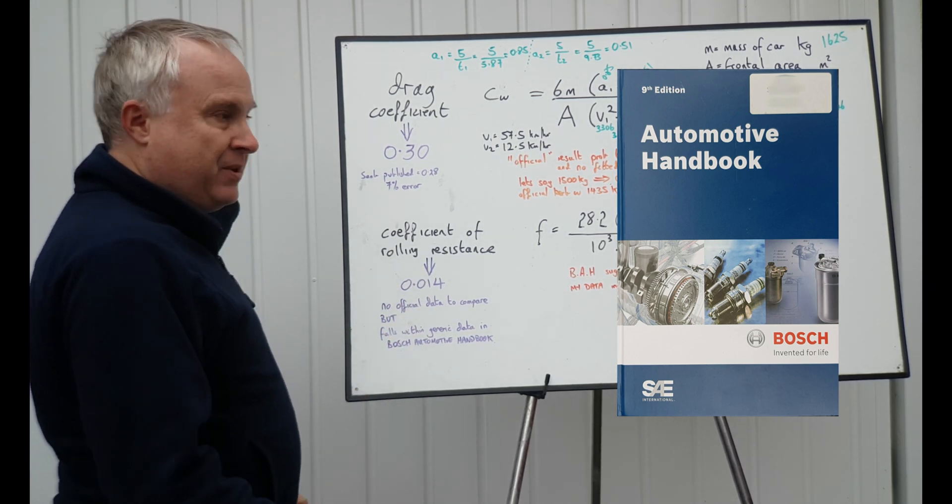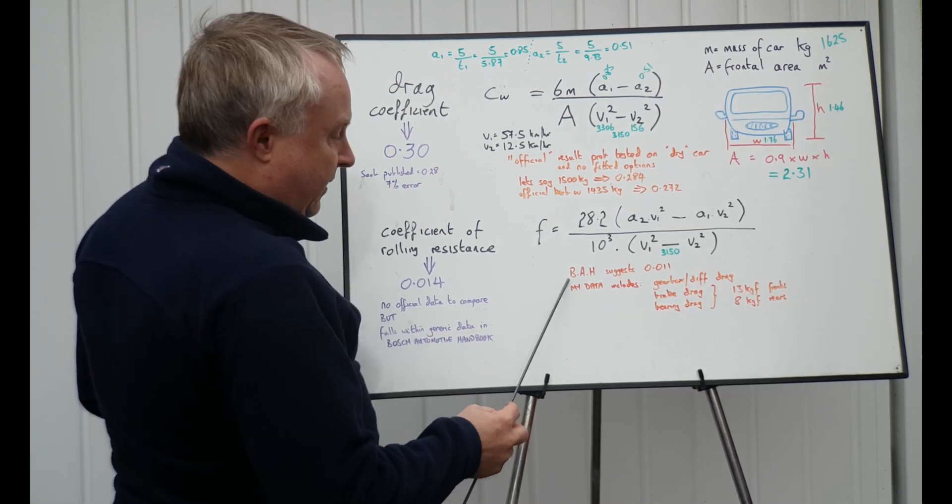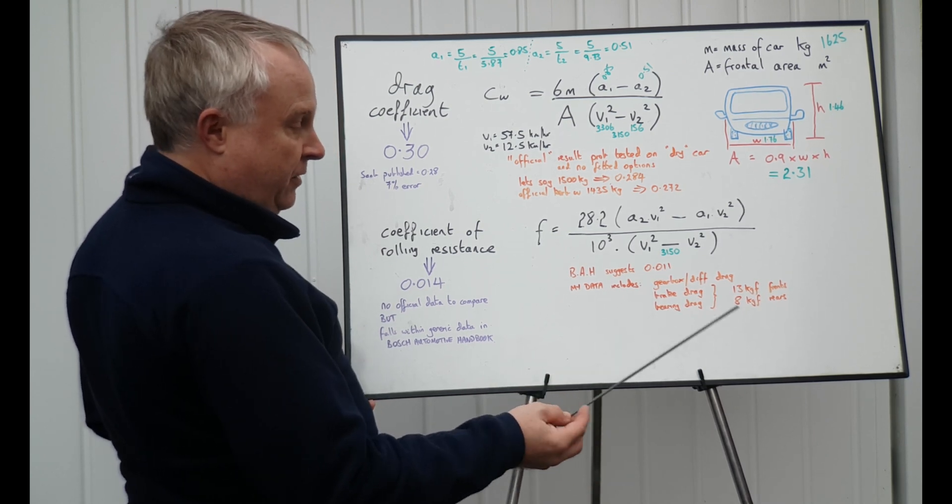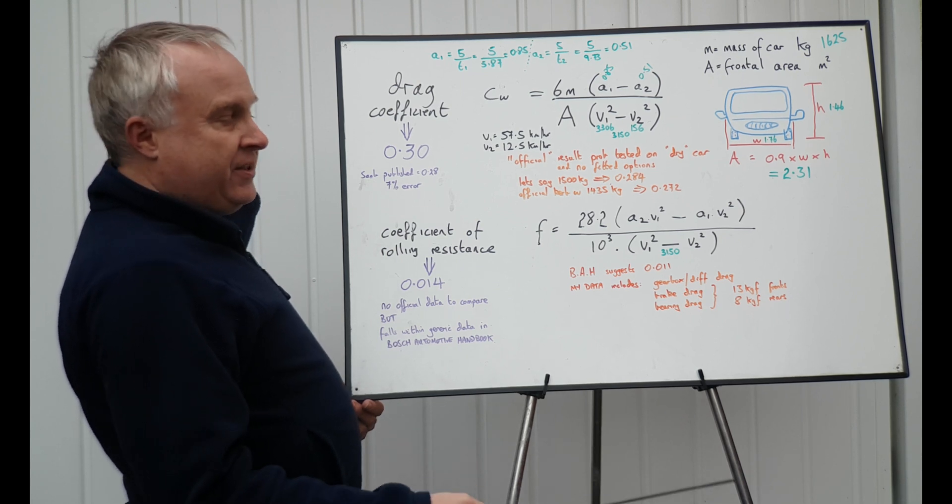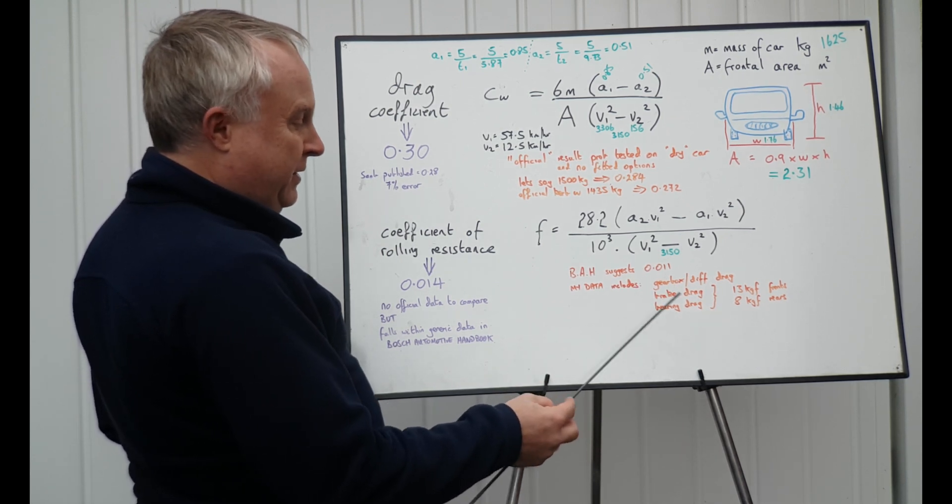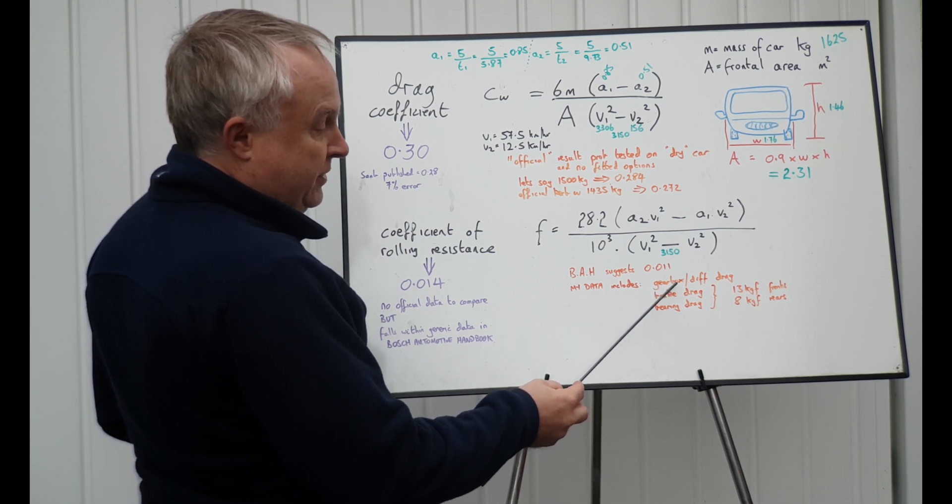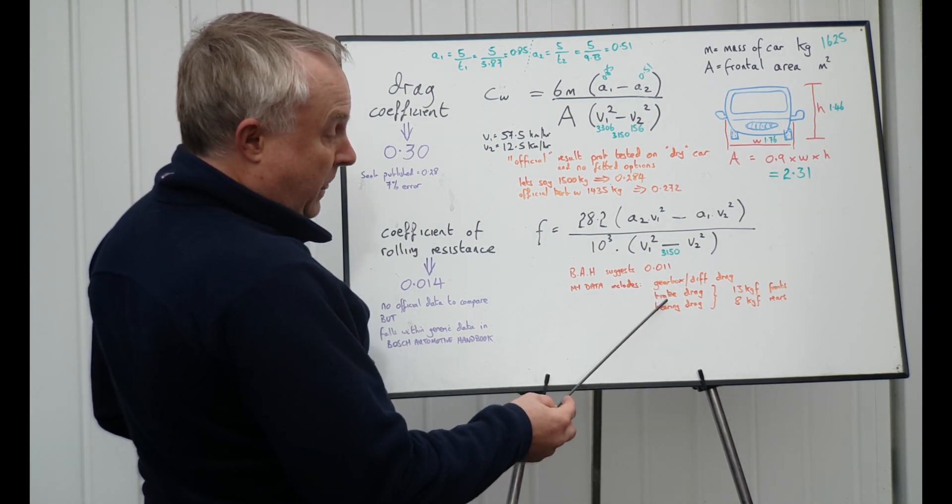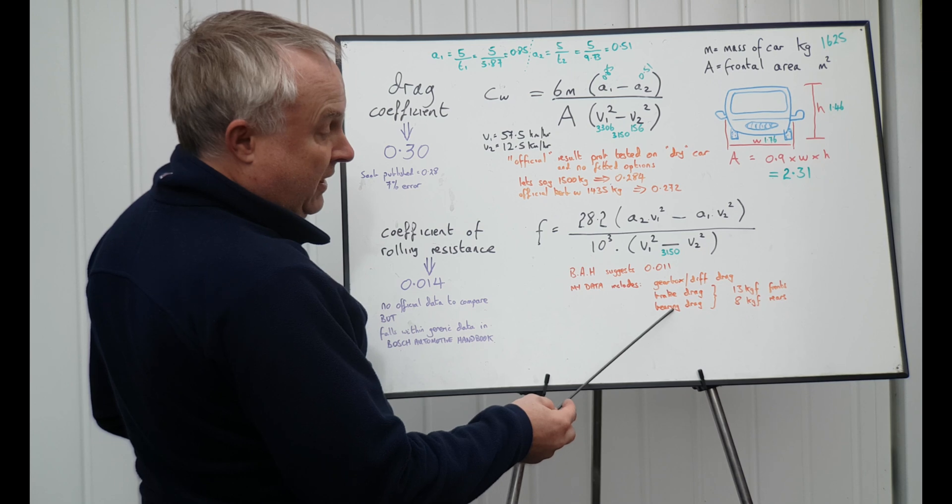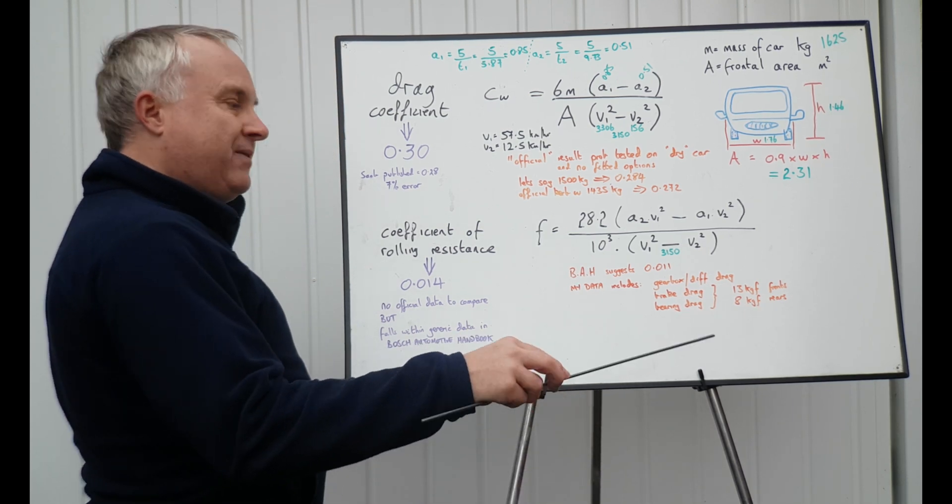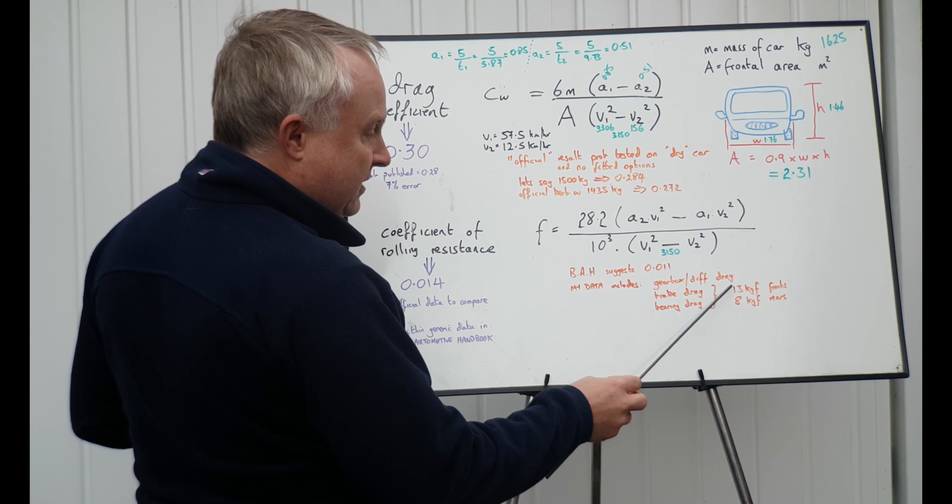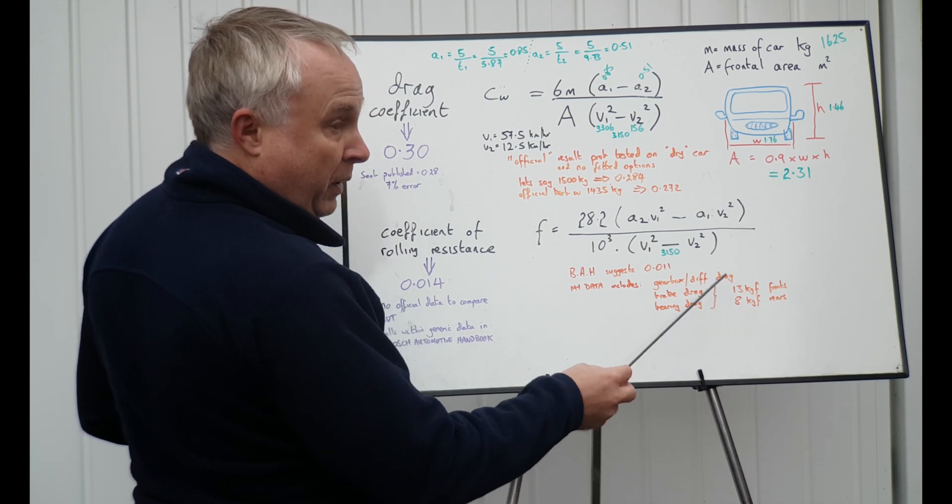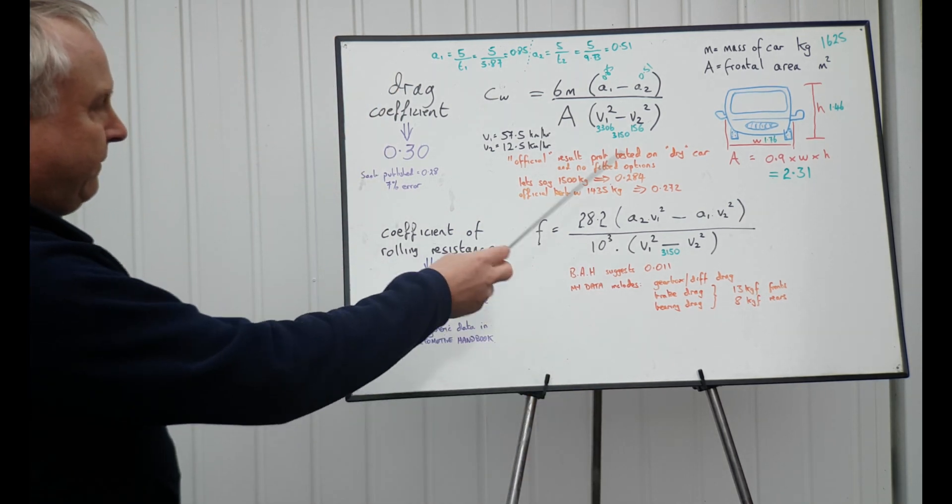I'll include links in the description if anyone's mad enough to want to go and buy one. Now, the Bosch Automotive Handbook suggests 0.011 for a mid-sized saloon. Their data on rolling resistance of tyres doesn't say exactly what's included. Bearing in mind my data includes drags from the gearbox and the differential rotating in a gearbox case full of oil, brake drag and bearing drag, which again, from previous MOT certificates, I know that brake drag is 13 kilogram force front wheels, 8 kilogram force rear wheels. That's per wheel, by the way. So, overall, I'm very happy with that result.